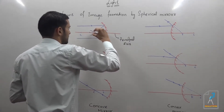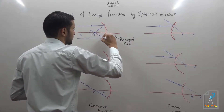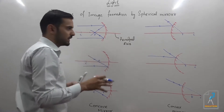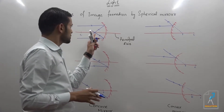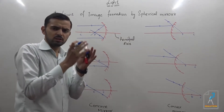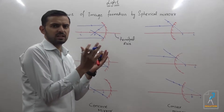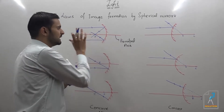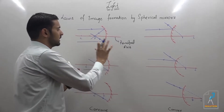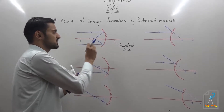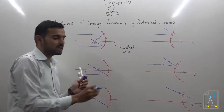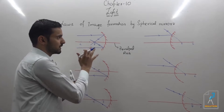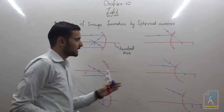So all the incident rays coming parallel to the principal axis will meet on, or cut, the principal axis at a point — that is called the focus of the concave mirror.